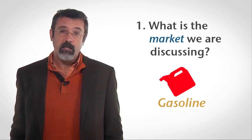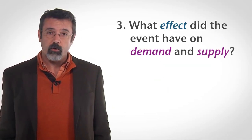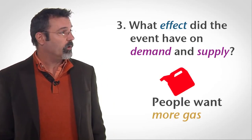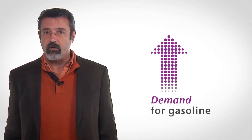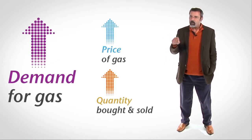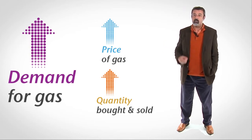Let's try some examples. Consider the market for gasoline. What happens to the market for gasoline when summer arrives and people want to travel more? First, we're discussing the market for gasoline. Second, the event is the arrival of summer that causes people to want to drive more. Third, ignoring the price of gas, people's desire to drive more means that they want more gas. The demand for gas has increased. When the demand for gas increases, we know that the price of gas will rise and the quantity of gas bought and sold will rise.